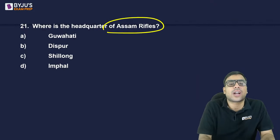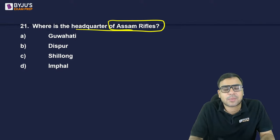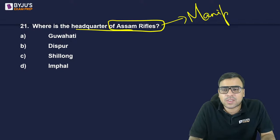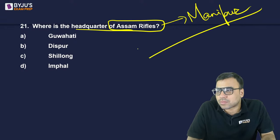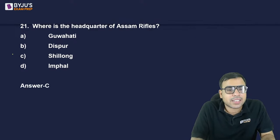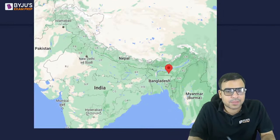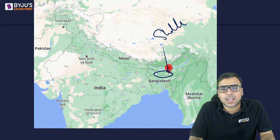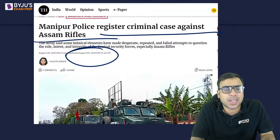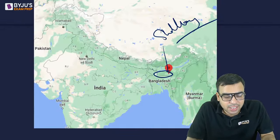Where is the headquarter of Assam Rifles? Guwahati, Dispur, Shillong, or Imphal? Assam Rifles was in the news regarding Manipur violence. The right answer is C — Shillong, which is in Meghalaya. It is a paramilitary force headquartered in Shillong. Also note: the undivided Assam's capital was also Shillong — this was asked in an MBA exam, likely CMAT.